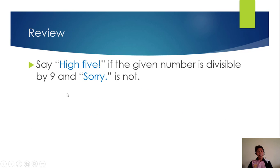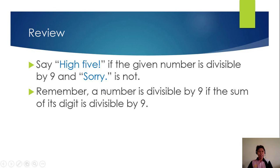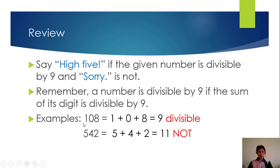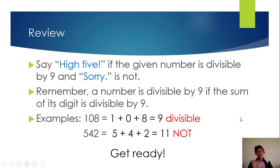We'll continue our review with the 9. Say 'high 5' if the given number is divisible by 9, and 'sorry' if it is not. Remember, a number is divisible by 9 if the sum of each digit is divisible by 9. For example, 108: 1 plus 0 plus 8 is equal to 9. 9 is divisible by 9, therefore it is 'high 5.' Another example is 542: 5 plus 4 plus 2 is 11, not divisible by 9, so it is 'sorry.' Are you ready? Let's start.